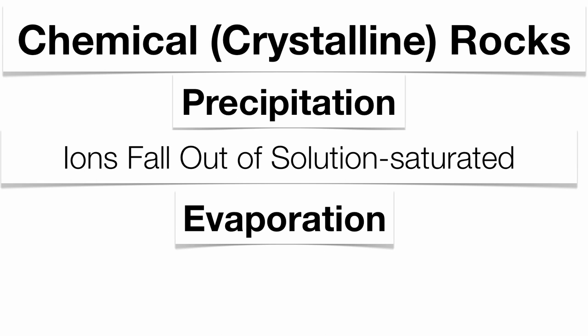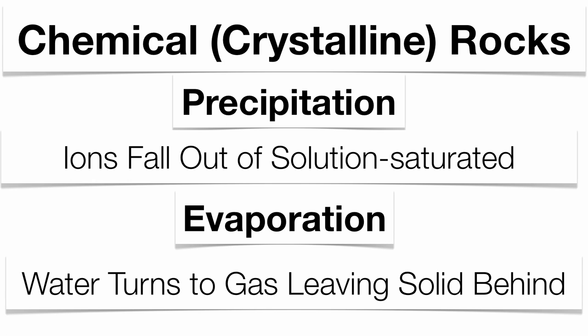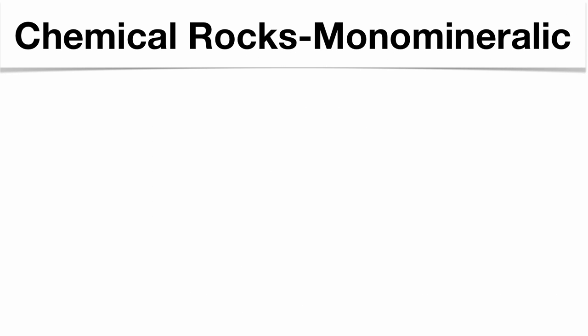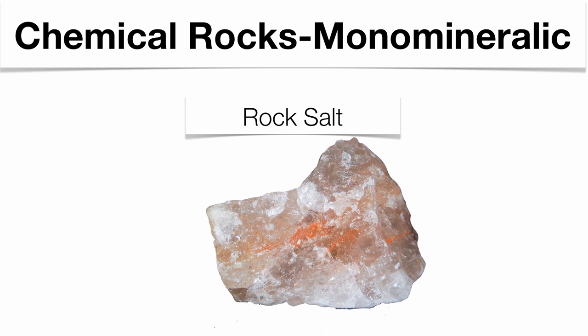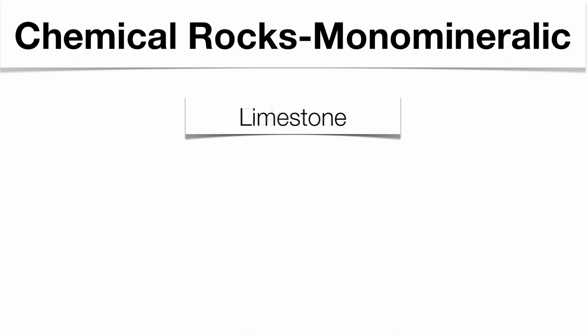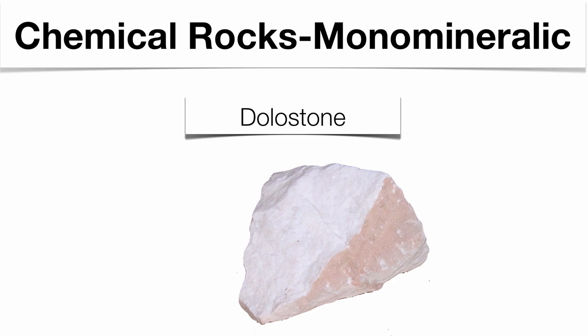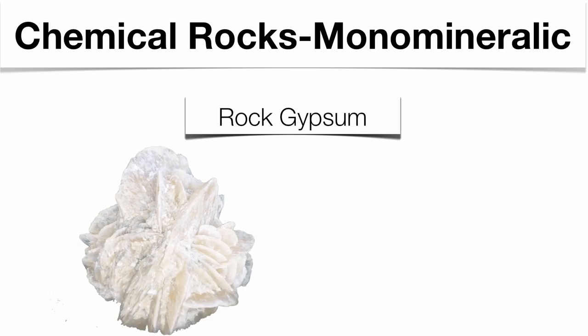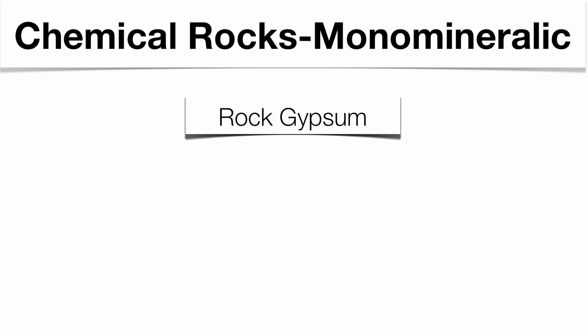The second process is evaporation. Water is a very good dissolver of substances, so water tends to have dissolved mineral matter in it. Water will evaporate off, but the substance dissolved in the water does not turn into gas — that substance is left behind. Water turns to gas, leaving the solid behind, and the product left behind is called an evaporite. Chemical rocks tend to be monomineralic: rock salt is made up of halite, limestone is made up of calcite, dolostone is made up of dolomite, and rock gypsum is made up of the mineral gypsum. The names of the rocks generally correspond with the mineral that makes them up.